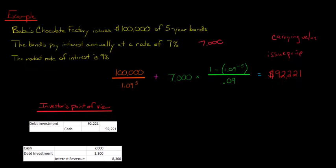I want to show you what the carrying value and the journal entries look like. So first of all, you would debit debt investment for $92,221, because you've got an asset, and you paid out cash of $92,221.